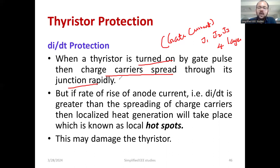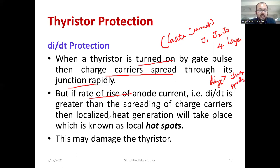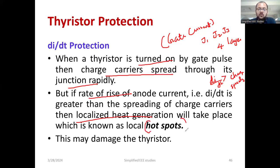SCR is one of the family members of the thyristor. When a thyristor is turned on by the gating pulse, the charge carriers spread through its junction very rapidly. If the rate of rise of anode current — that is DI by DT — is greater than the spreading of charge carriers, then the main problem is localized heat generation, forming a hotspot. This hotspot phenomenon can ultimately damage the thyristor, just like thermal runaway.